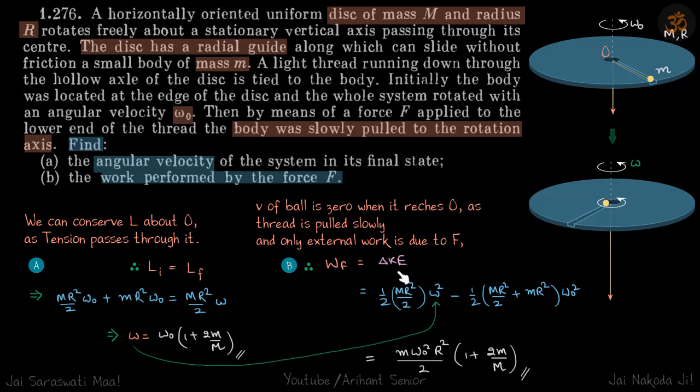So final kinetic energy is half I disc into omega squared minus half (I disc plus I ball) into omega naught squared. I1 is of disc, I2 is of ball. So we put the value of omega from here and we solve it, and this is the answer which we get.